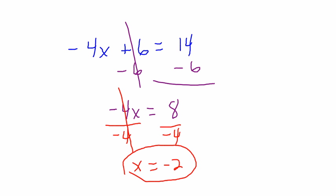Let's check our solution. Negative 4 times... Instead of x, we will plug in negative 2 plus 6 should equal 14. Let's see. Negative 4 times negative 2 is 8. And 8 plus 6 gives us 14.